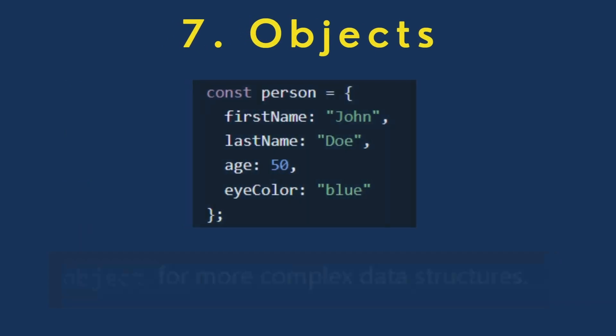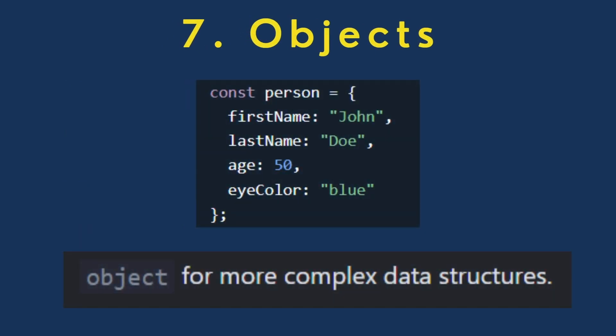The object is a collection of non-primitive types. It is a more complex data structure.